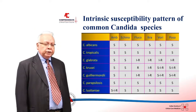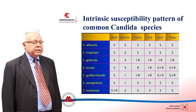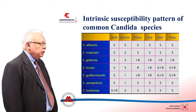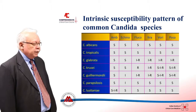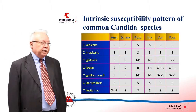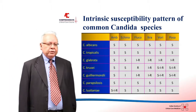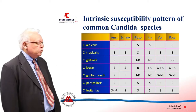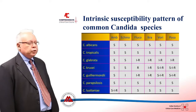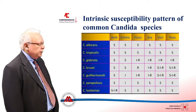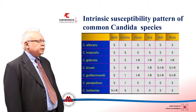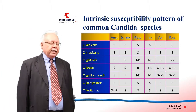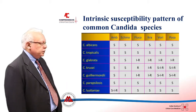It is very important to know the sensitivities of the different Candida species to different azoles and other antifungal agents. As you can see, Candida tropicalis and Candida albicans, which are most common in our country, are usually sensitive to almost all azoles, echinocandins, and amphotericin B.